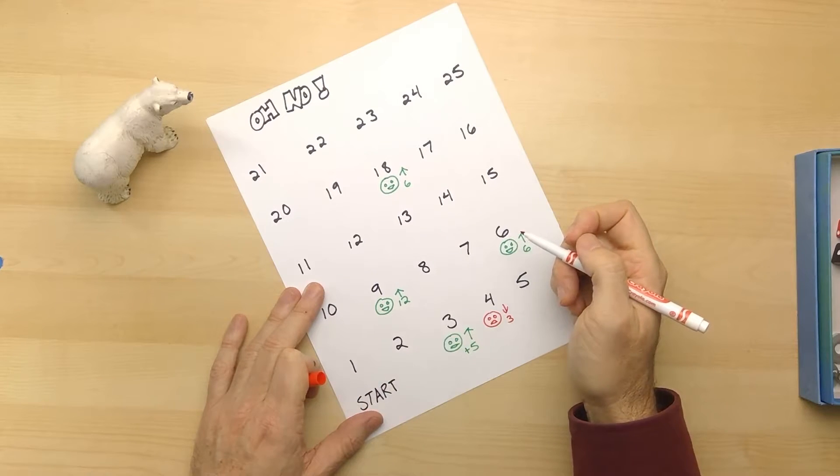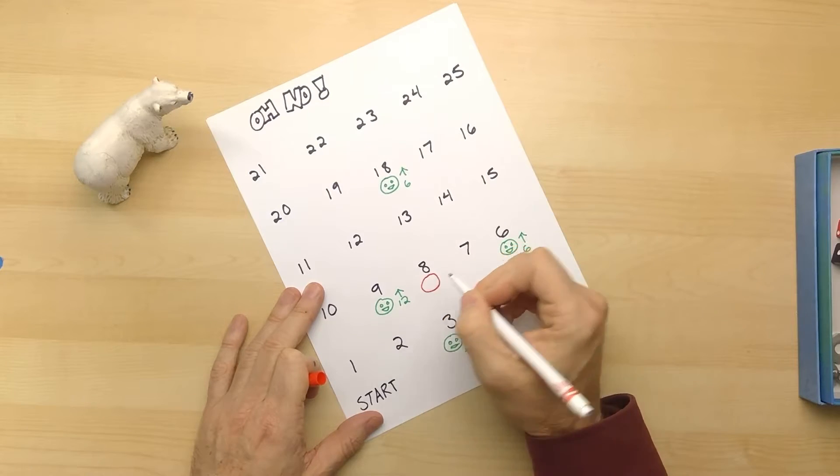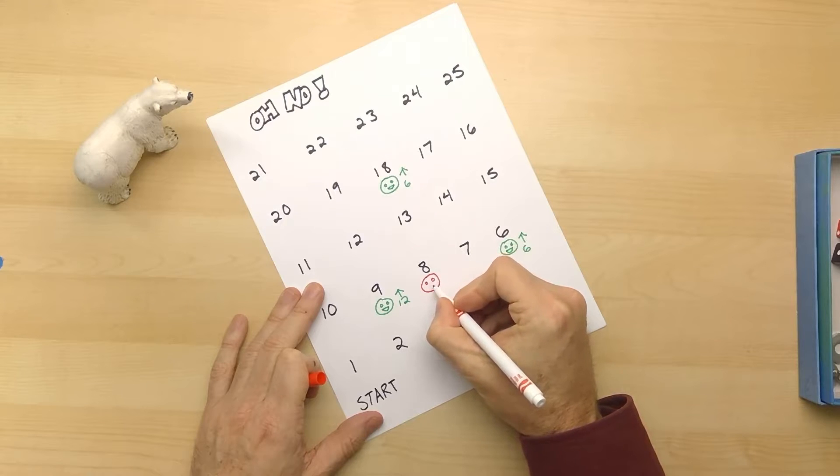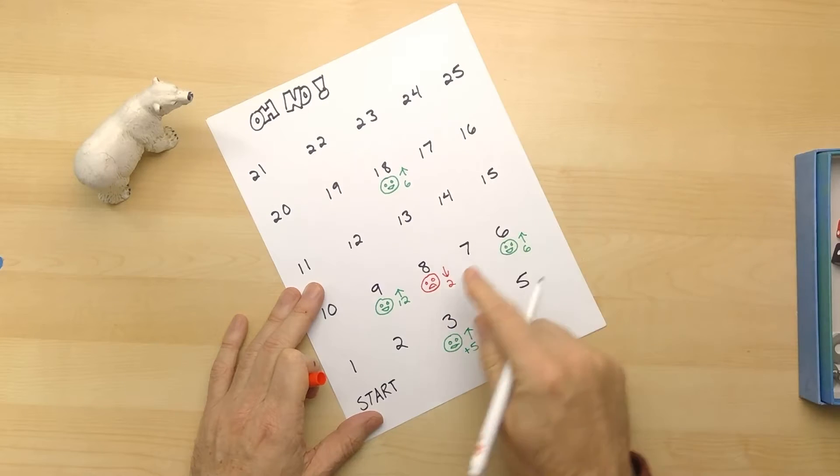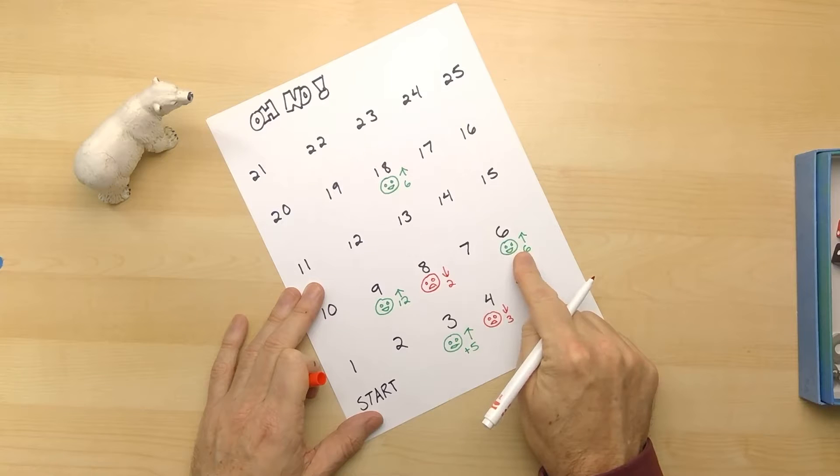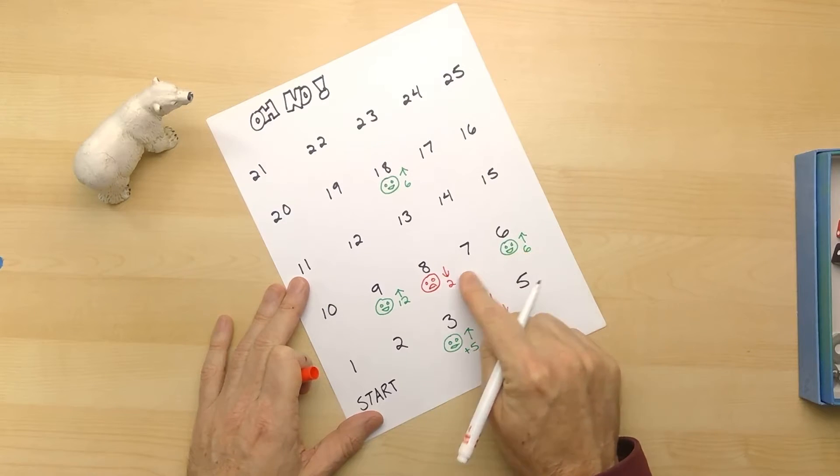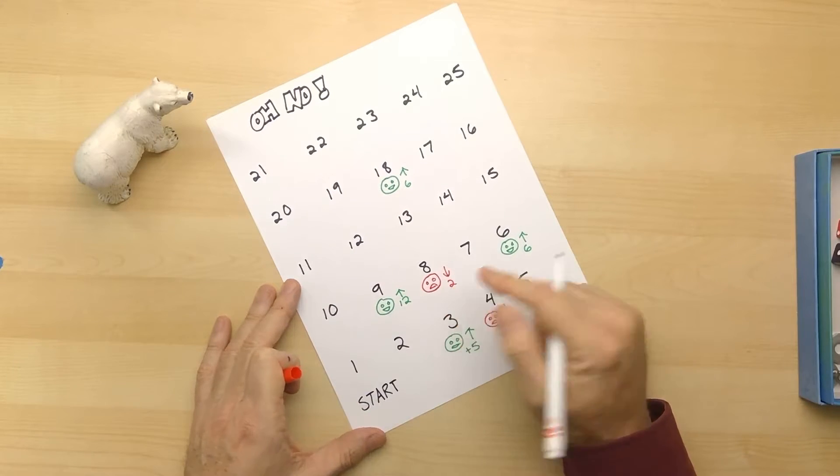What about if we ended up on the eight, and we said go back two? What would happen? On eight, we go back two - one, two. Oh, then we get to go back to six now - one, two, three, four, five, six. So it might not be too bad to go backwards on the eight.